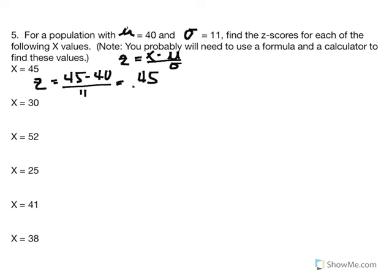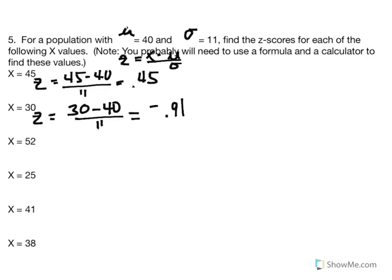If we take 0.45 and multiply it by 11, we get approximately 5 points — so 0.45 of 11 is 5 points. The mean is 40, and adding 5 points, or 0.45 of 11, gives us a score of 45. For part B, z equals 30 minus 40 divided by 11. Enter 30 minus 40 divided by 11, and we get a negative z-score of 0.91.